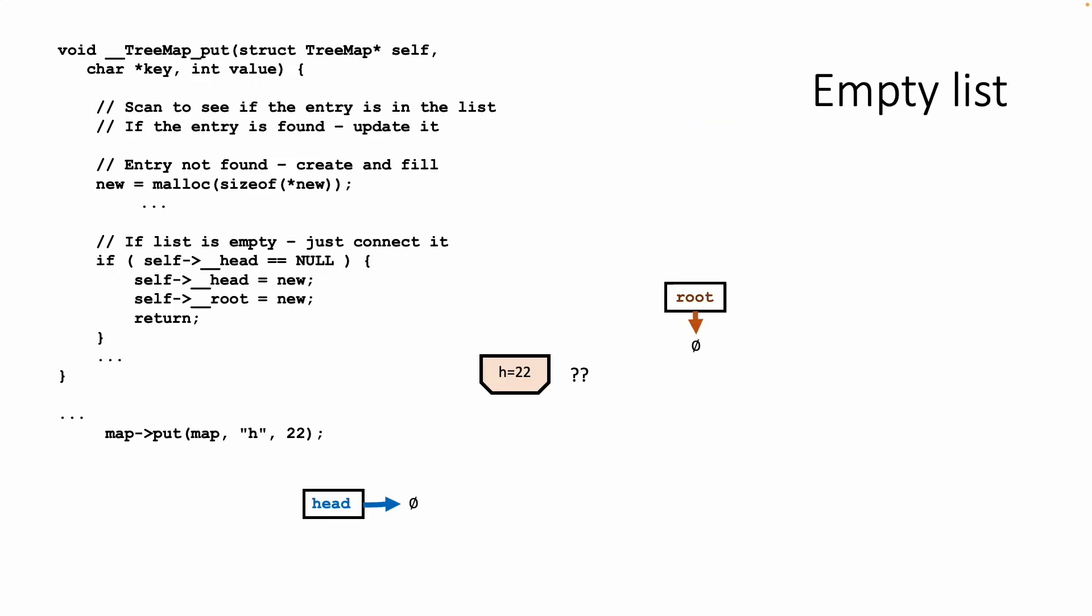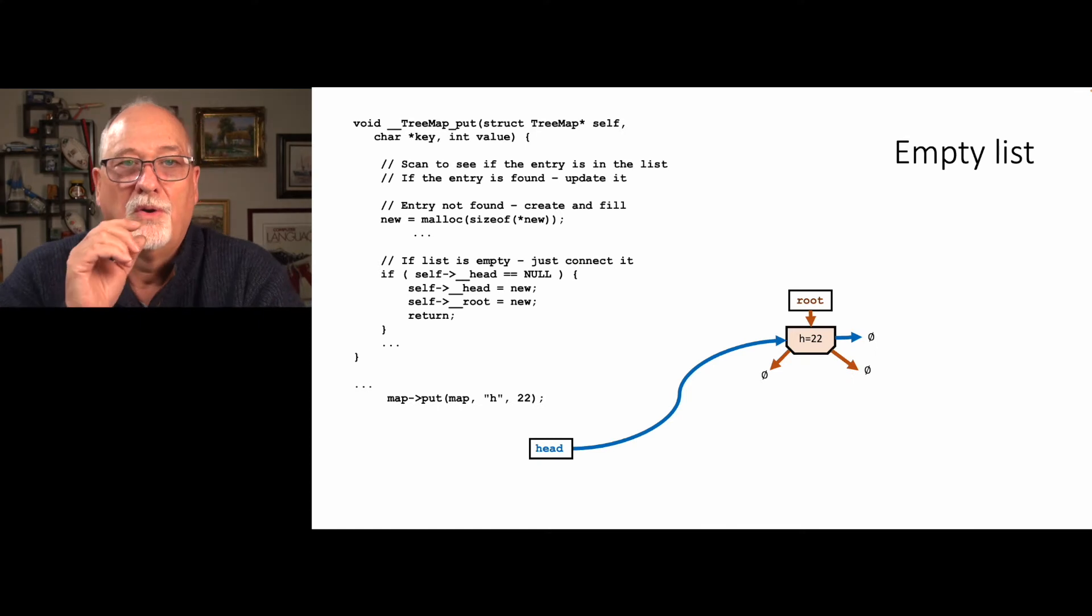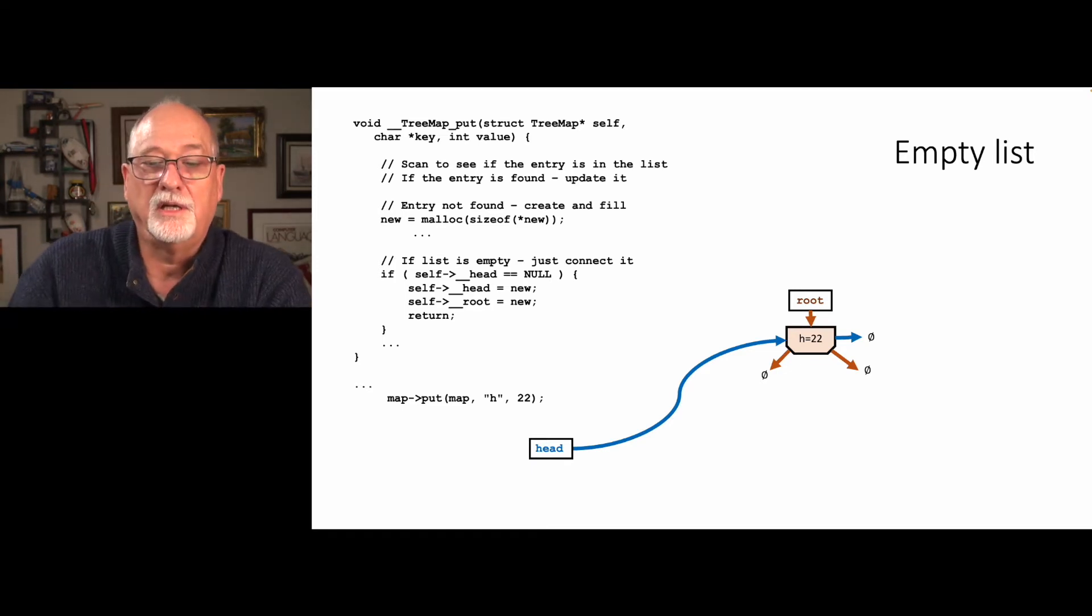The empty list is easy. We have to scan to see if it's in the list. First we can just say, if self-head is null - it'd be the same as saying if self-root is null - well, we just point head and root to the new item. I'm going to insert h equals 22. I'm going to insert these in order so the list doesn't run out of space on my PowerPoint slides. When we're done, root is going to point to h equals 22, the left is null, the right is null, the next is null, and head is going to point to the item. So we have a valid linked list and we have a valid tree at the same time.